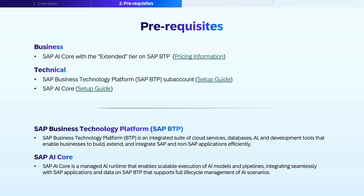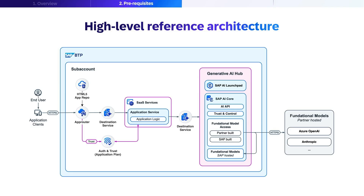Before implementing, let's cover the prerequisites needed. You will need an SAP Business Technology Platform or SAP BTP subaccount and an SAP AI Core service with the extended tier on SAP BTP, for which pricing information is available in the linked resources. SAP BTP is an integrated set of cloud services, database, AI, and development tools that enable businesses to build, extend, and integrate SAP and non-SAP applications efficiently. SAP AI Core is a managed AI runtime that enables scalable execution of AI models and pipelines, integrating seamlessly with SAP applications and data on SAP BTP. It supports full lifecycle management of AI scenarios — by setting up these prerequisites, you will establish a strong foundation for AI projects efficiently and at scale.